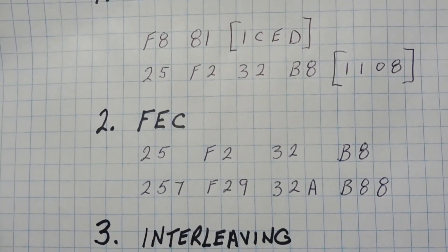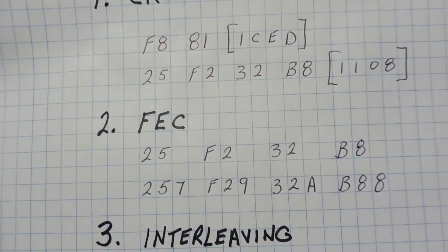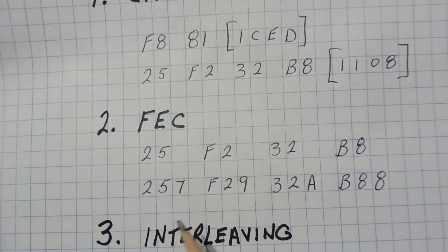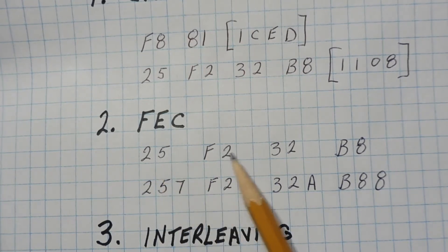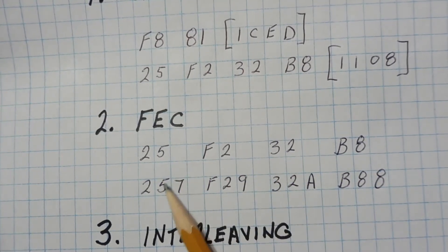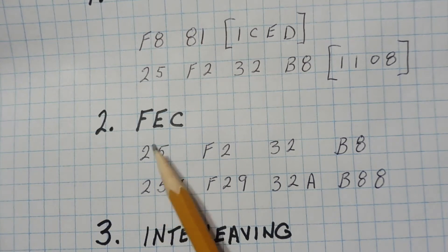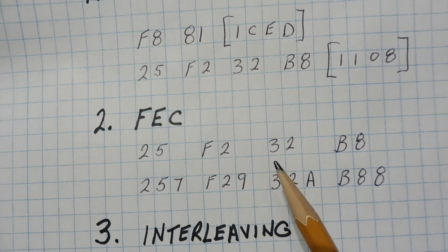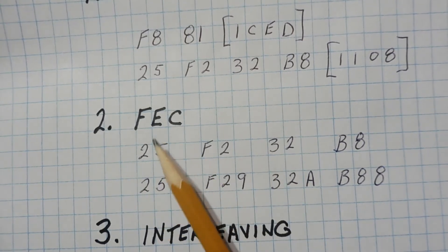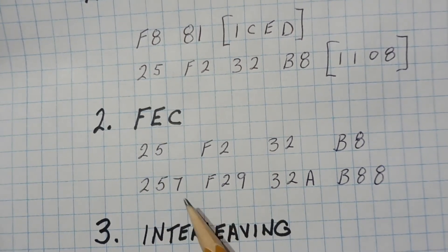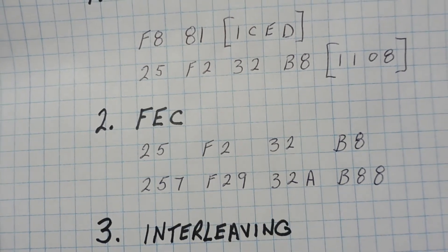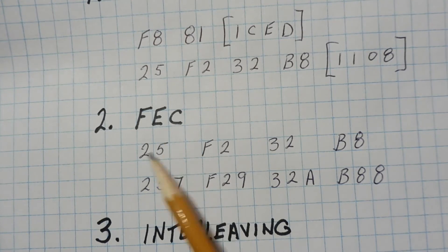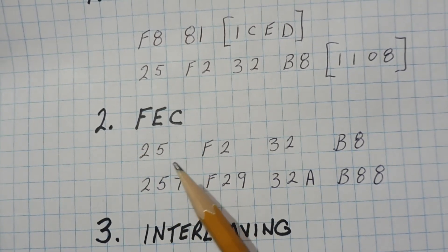Now the second one is forward error correction. So for every byte that we send, we have to tack on four bits, which is our parity bits or sometimes called check bits. So you can see here, here's the bytes that we want to send, and we tack on four bits to every byte. So 25 will become 257, F2 become F29. So we're adding on, we're encoding each byte and we're adding on parity bits or check bits. So at the receiving end they could do a calculation, and they actually could tell if there's any single bit errors in the byte, and they actually could correct it without asking for a retry.